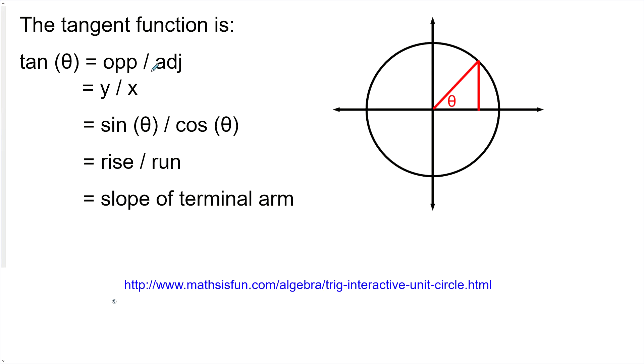The tangent function comes from the tan ratio, which is opposite over adjacent. Which means that our opposite side is our y value of a coordinate on a circle and the adjacent is the x. So it's also y over x.